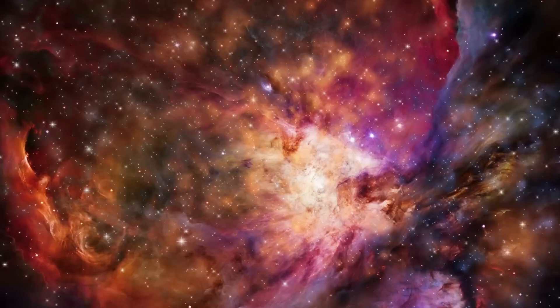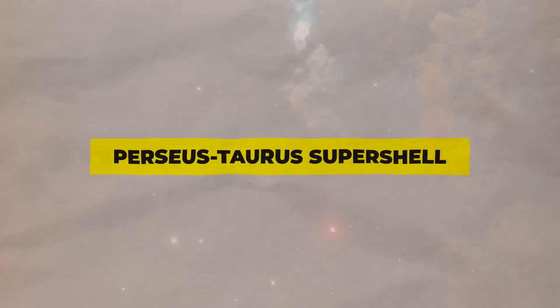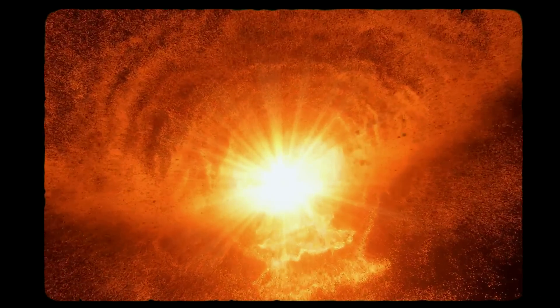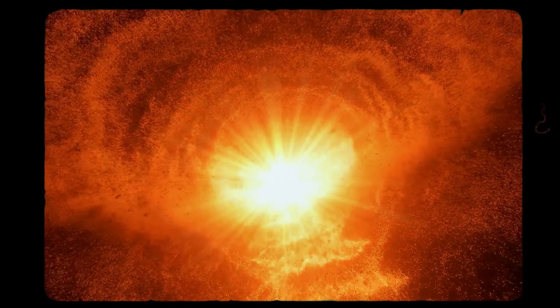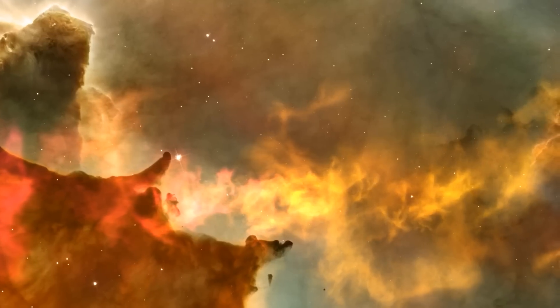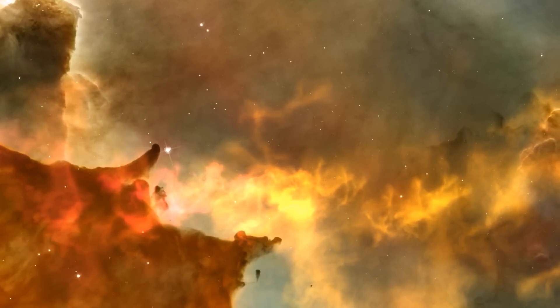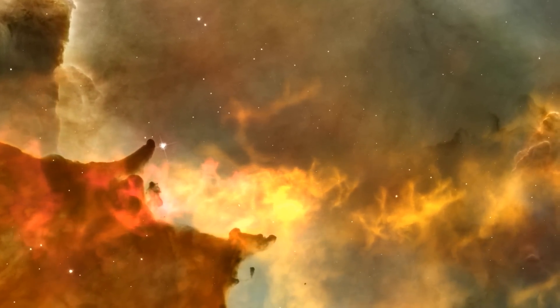This recently discovered fissure, known as the Perseus-Taurus super-shell, measures 500 light-years across and was probably formed millions of years ago by a devastating supernova. The good news is that this star-crossed tragedy has a happy ending because the ancient explosion likely increased star formation on the margins of the super-shell, according to the researchers.